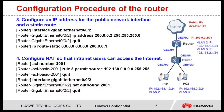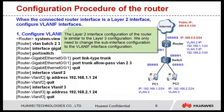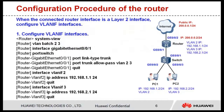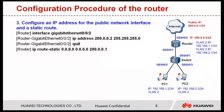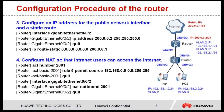The configuration is complete. The Layer 2 interface configuration of the router is similar to the Layer 3 configuration. We only need to change the subinterface configuration to the VLAN IF interface configuration. Step 1: Create a VLAN IF interface and assign an IP address to the VLAN IF interface. Step 2: Configure DHCP and DNS to allocate IP addresses and specified DNS server address to users. Step 3: Configure an IP address for the interface connected to the internet and a static route. Step 4: Configure NAT so that internet users can access the internet.